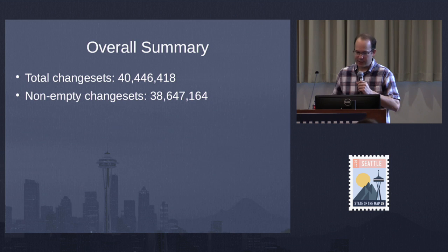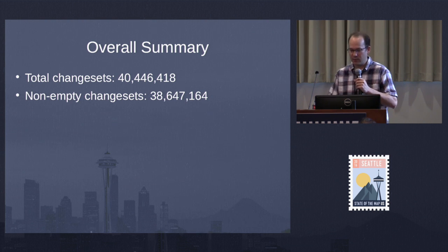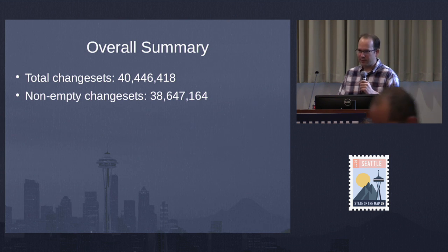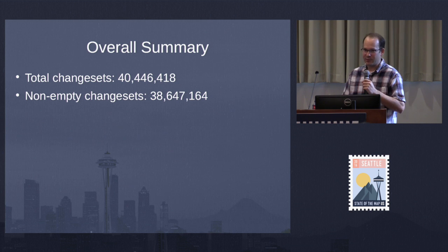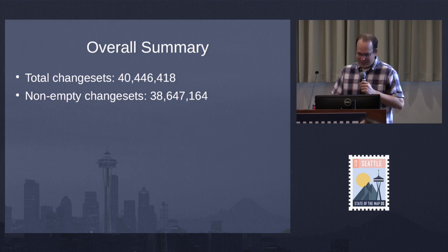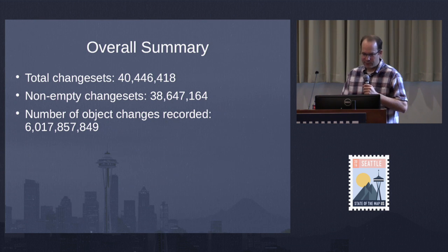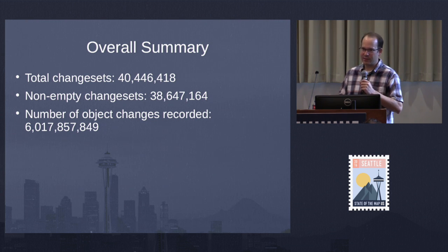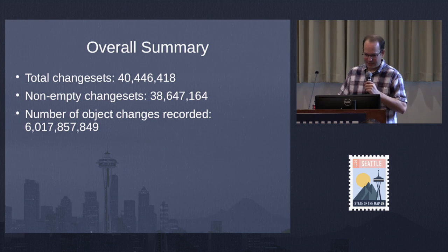Overall, we have 40 and a half million changesets. There are 2 million empty changesets — a combination of old versions of Potlatch, which used to open a changeset as soon as you launched the editor even if you didn't make any changes, and some kind of script that went rogue in mid-2014 and created 500,000 empty changesets for no reason until it was banned. The total number of changed objects recorded is just over 6 billion. In theory this should match the sum of all version numbers of all objects in OSM, but data consistency is hard over a 15-year project.